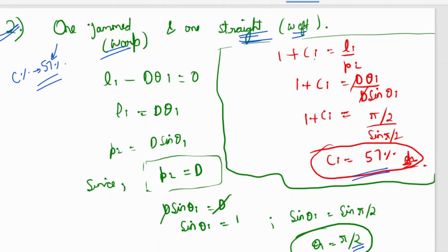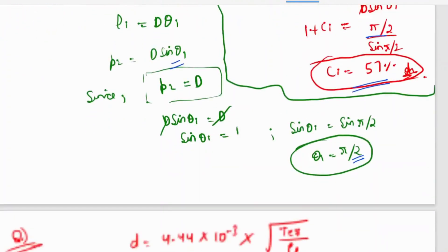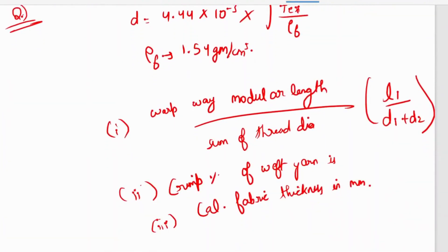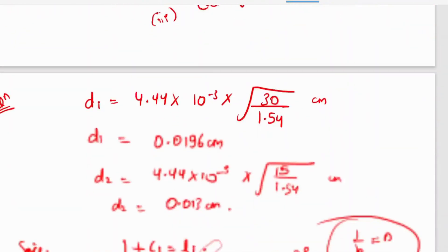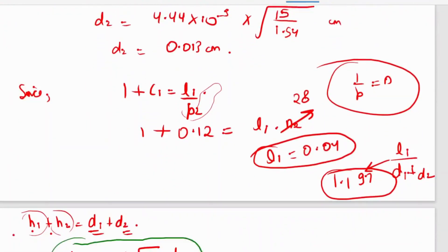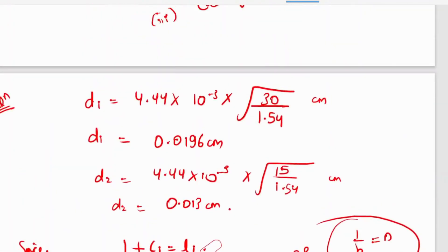To derive the 57 percent crimp: using 1 + c = l/p2, substituting l1 = d×θ and p2 = d×sin(θ), and putting θ = π/2, you get π/2 divided by sin(π/2), which gives the crimp percent of 57 percent. This is how we calculate it.